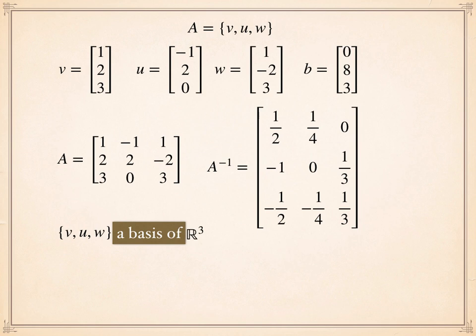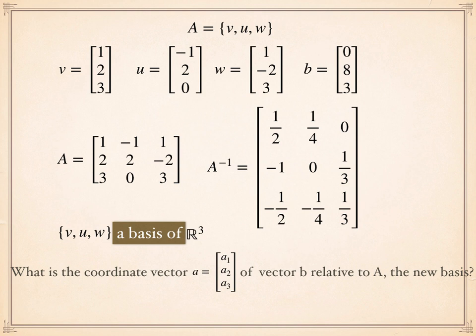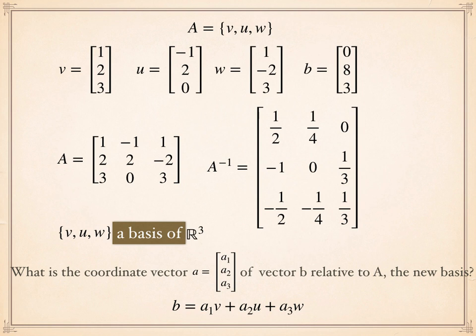The question is: can we find a vector a such that a is the coordinate vector of b relative to the new basis A? Or can we find scalars a1, a2, and a3 such that vector b is a linear combination of v, u, and w with weights a1, a2, and a3 respectively?